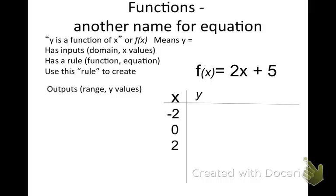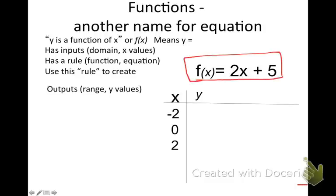The last thing I want to go over is graphing using an XY table, which we covered in Unit 16. Some vocab: a function is just another way to say equation. Y is a function of X, written as f(x), which just means y equals. When you have a table, you have your inputs — the x-values — also called your domain. In this table, the domain is -2, 0, and 2. The function given is f(x) = 2x + 5, which is the function rule you'll use to find your outputs.